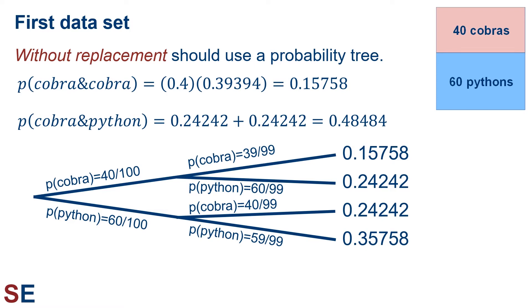To calculate the probability of choosing a cobra and a python using the probability tree, we need to work through it twice. First, cobra then python: starting at the left we have 40 divided by 100 for the probability of cobra, then for the second branch the probability of python is 60 divided by 99, giving us 0.24242. Second, python then cobra: starting at the left we have 60 divided by 100 for the probability of python, then for the second branch the probability of cobra is 40 divided by 99, giving us 0.24242. Therefore, the overall probability of choosing a cobra and a python is 0.24242 plus 0.24242 equals 0.48484. In this example these probabilities were the same, but you should always follow the route of every combination you're interested in rather than using that as an automatic shortcut.